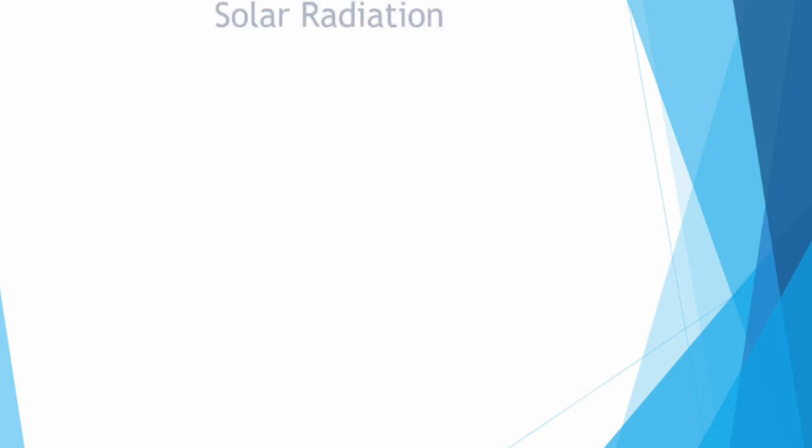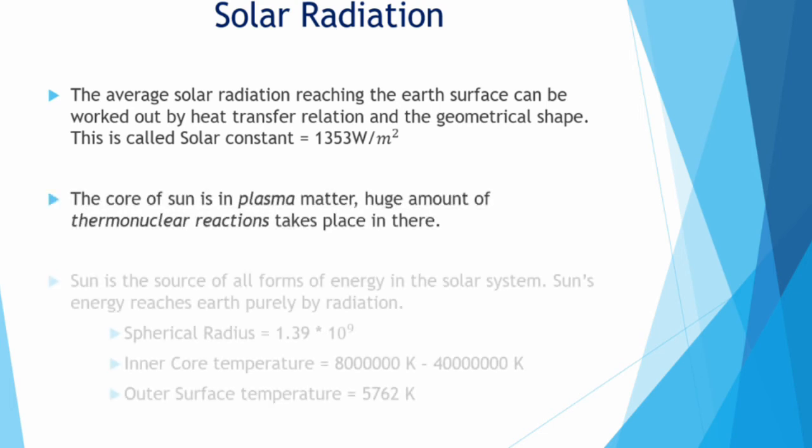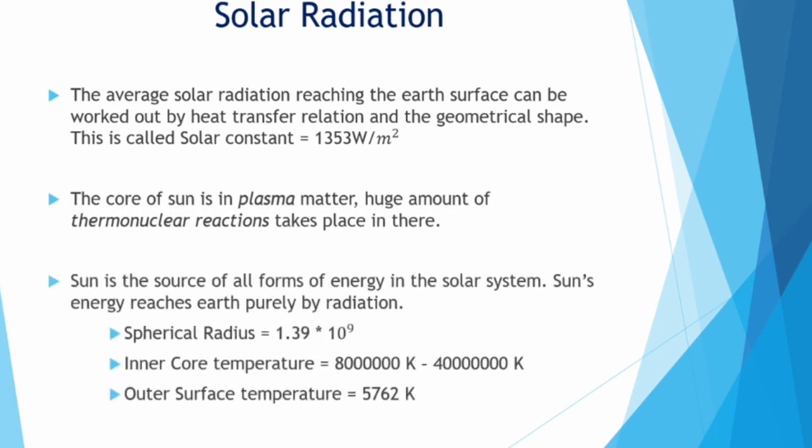What is solar radiation? As we all know, the core of the sun is made up of plasma matter and has a huge amount of thermonuclear reaction taking place. In a single instance, there are huge amounts of hydrogen atoms being fused into helium and thus a huge amount of energy is being released from the sun. The inner core temperature of the sun is estimated to be above 80 lakh Kelvin.